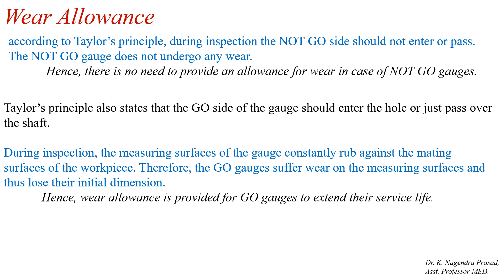According to Taylor's principle, during inspection the not-go gauges should not enter inside the hole or should not pass over the shaft. The not-go gauge does not undergo any wear; hence there is no need to provide any wear allowance on the not-go gauges. Based on Taylor's principle, go gauges should enter the hole or go gauges just pass over the shaft. During inspection, the measuring surfaces of the go gauge constantly run against the mating surfaces of the workpieces; therefore go gauges suffer wear on the measuring surfaces and lose their initial dimensions. Hence, wear allowance is provided for the go gauges to extend their service life.